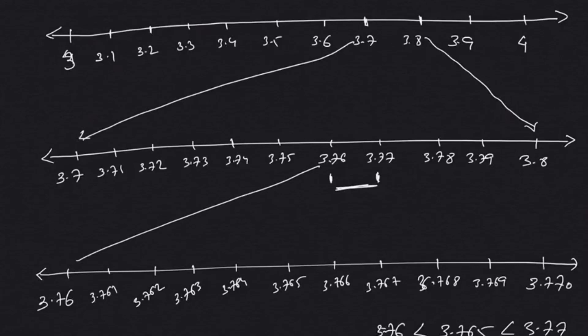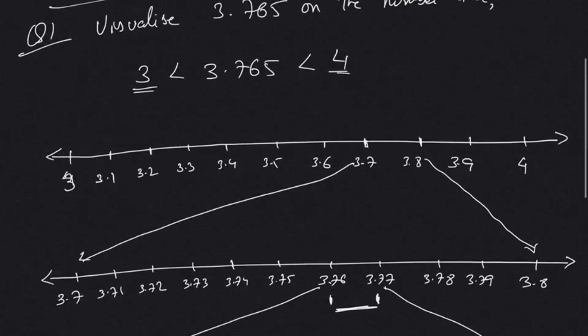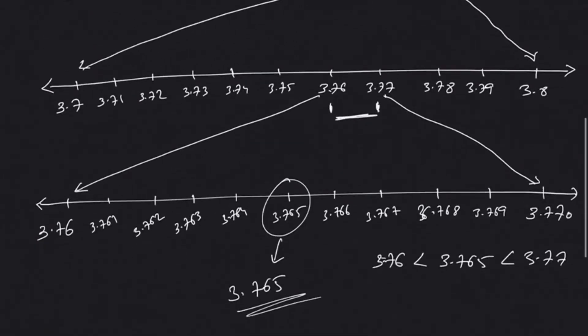Now we will see that our number that we want after magnification, we have our 3.765. So this is our number 3.765. So this is it. It's a very simple concept - you just keep expanding and expanding until you reach the number.